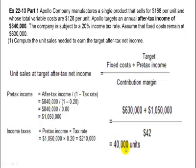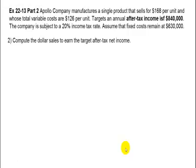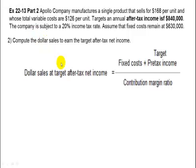Part 2 asks you to compute the dollar sales needed to earn the target after-tax income. The first part was units; this one is dollar sales. It's basically the same formula, except instead of contribution margin in the denominator, you use the contribution margin ratio.